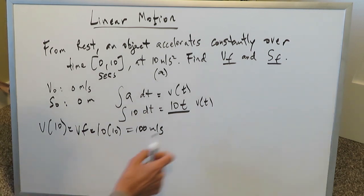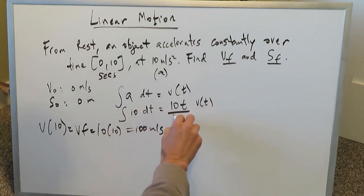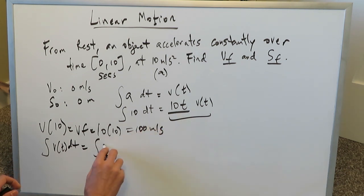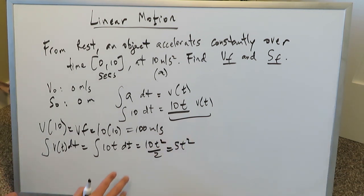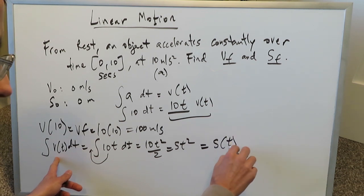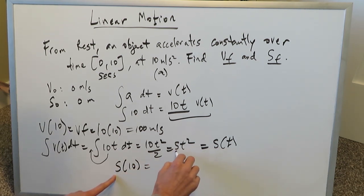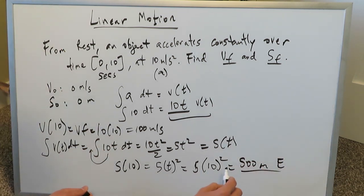Now for the final position using calculus: if we have the velocity function and take its integral, we arrive at the position function. Integrating 10t dt gives us 10t squared over 2, which is 5t squared. That is the position function. At time t=10: position equals 5 times 10 squared, which is 500 meters due east — confirming what we had from the algebra method.